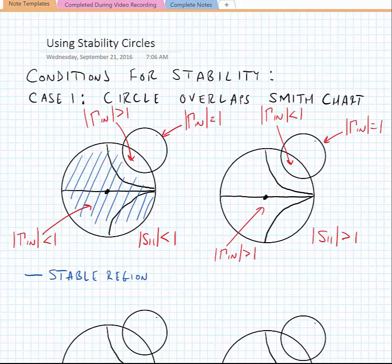If, on the other hand, the magnitude of S11 is greater than one, we have kind of the opposite scenario where the region of overlap is the region of stability. We can do a similar thing at the load. This was done at the source, we can do a similar thing at the load.